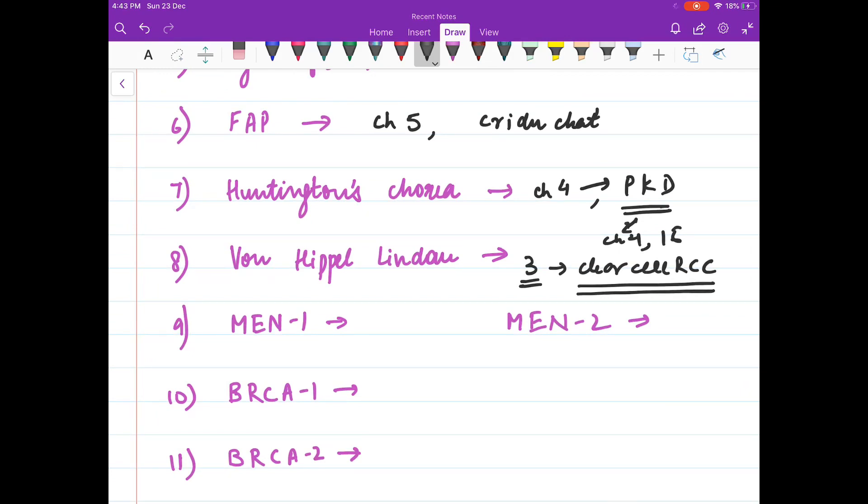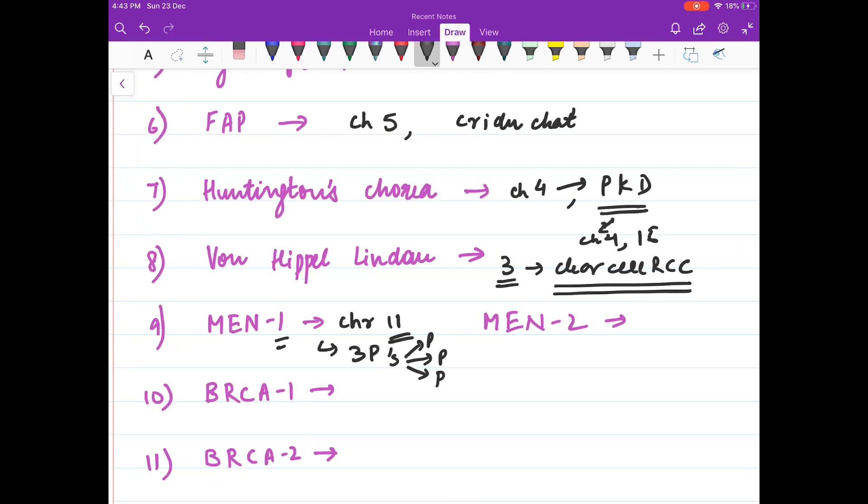MEN1, this is chromosome 11. Remember the features of MEN1 syndrome: 3 P's - pituitary adenoma or prolactinoma, hyperparathyroidism, and pancreatic neuroendocrine tumor. MEN2 is present on chromosome 10.